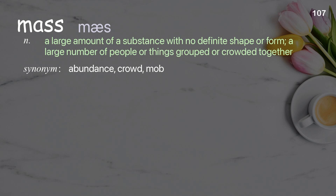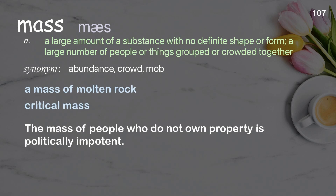Mass: a large amount of a substance with no definite shape or form; a large number of people or things grouped or crowded together. Examples: a mass of molten rock; critical mass. The mass of people who do not own property is politically impotent.